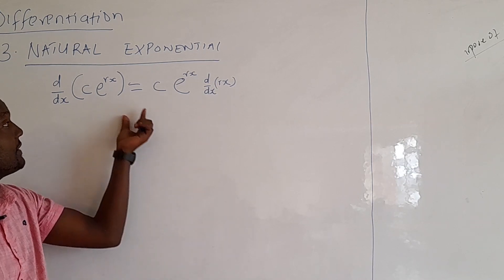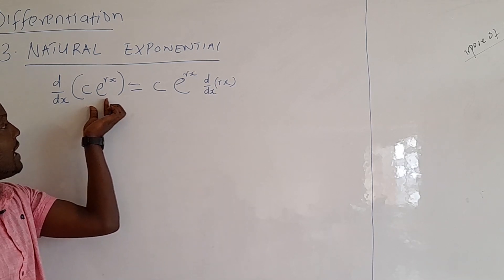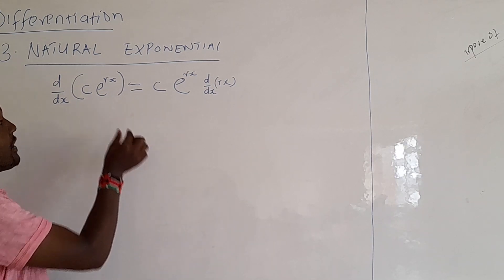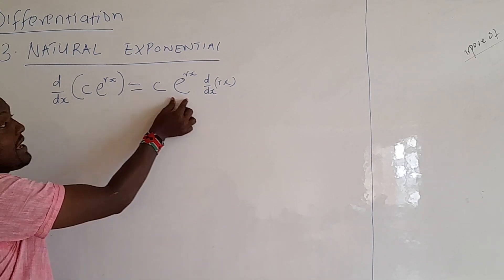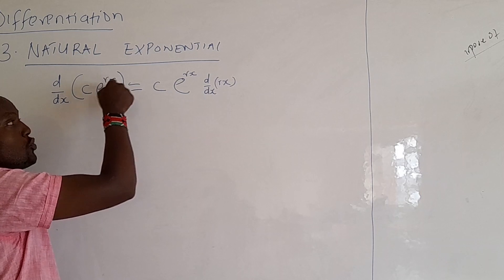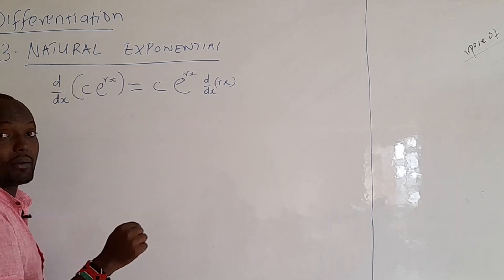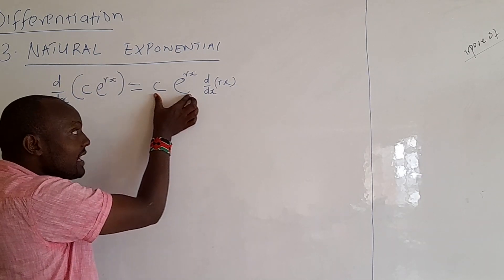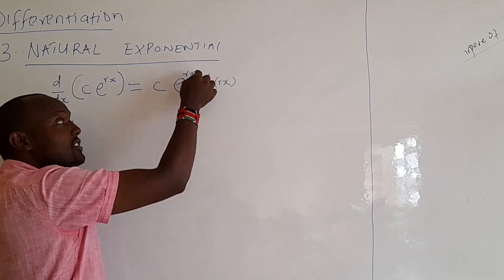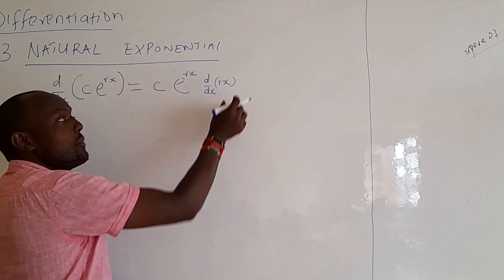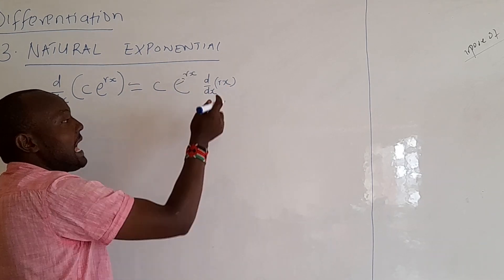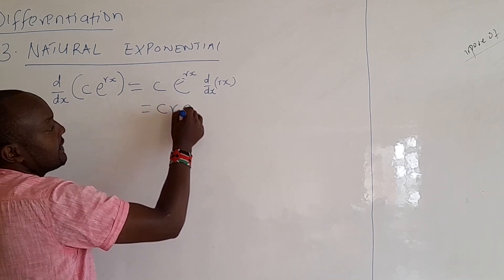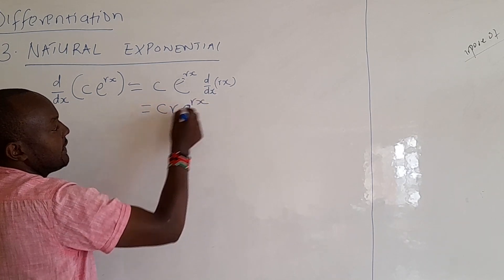What do I mean? If you have exponential to power rx, it remains the way it is but now you differentiate the power. What happens is that you have the exponential the way it is, but you differentiate the power where you get r. So in that case you have c·r·e^(rx).